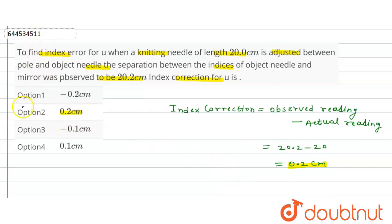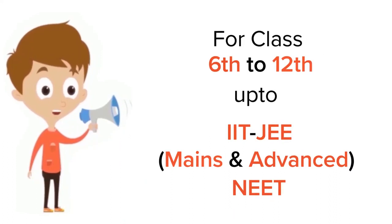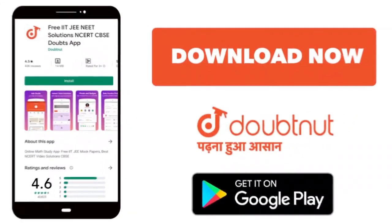So see here option second is our correct option. Thank you. For class 6 to 12, IIT JEE and NEET level, trusted by more than 5 crore students. Download Doubtnet app today.